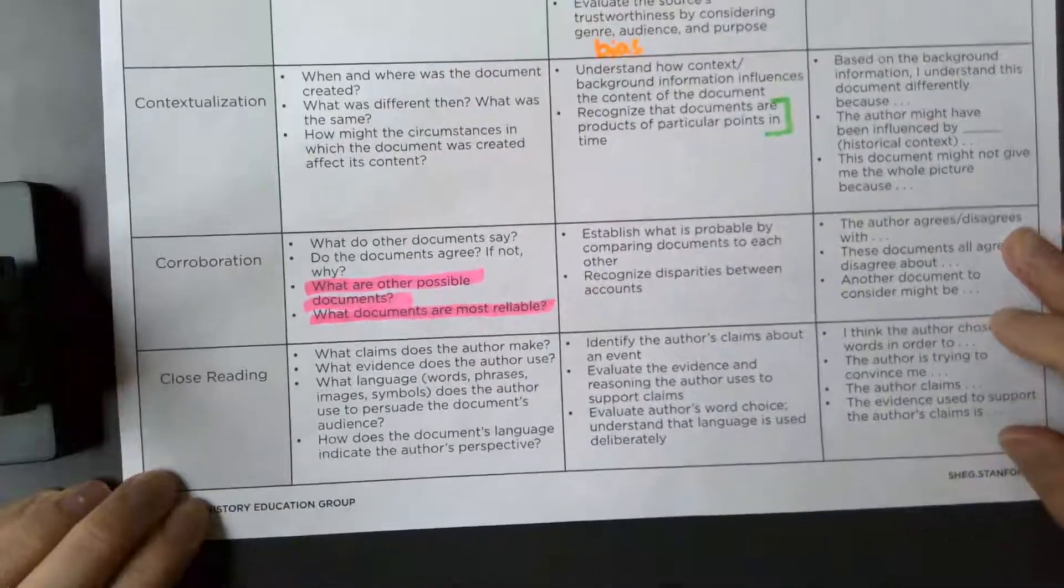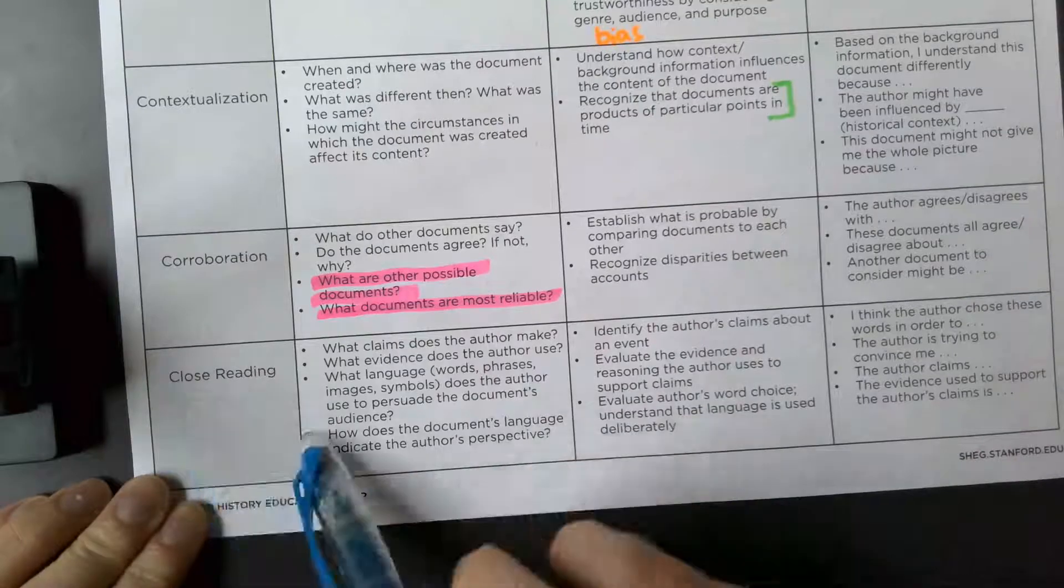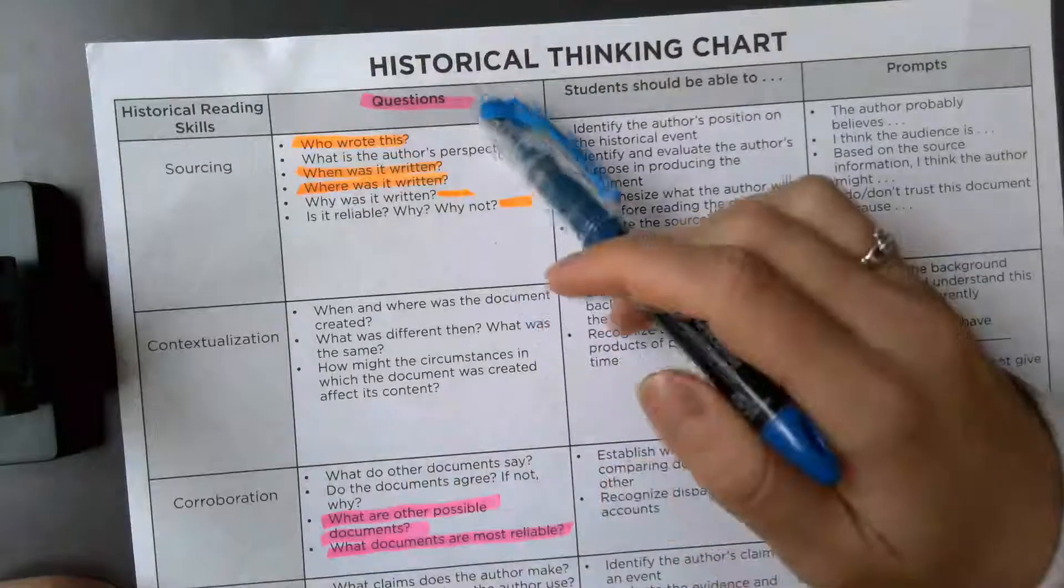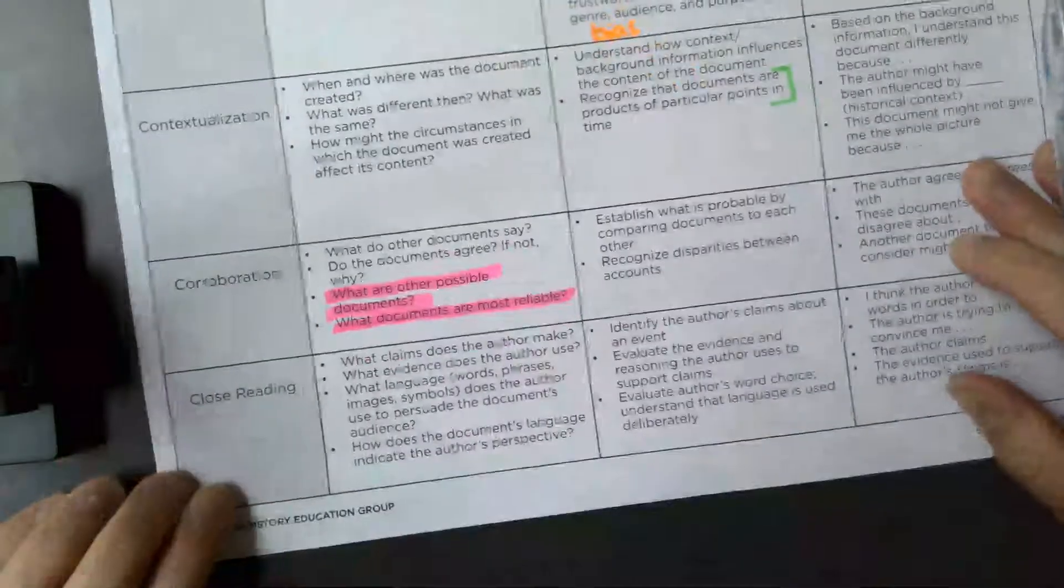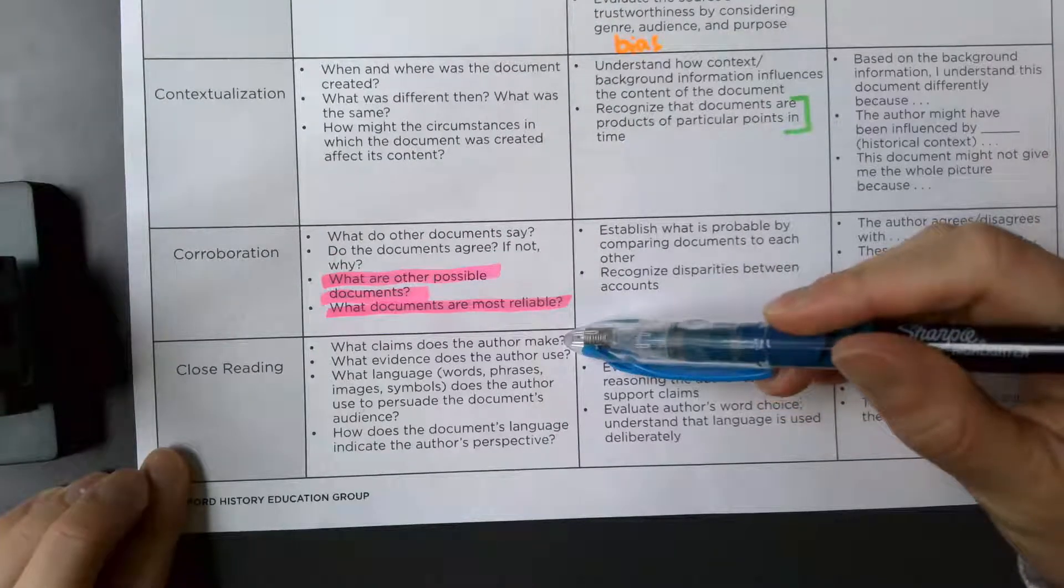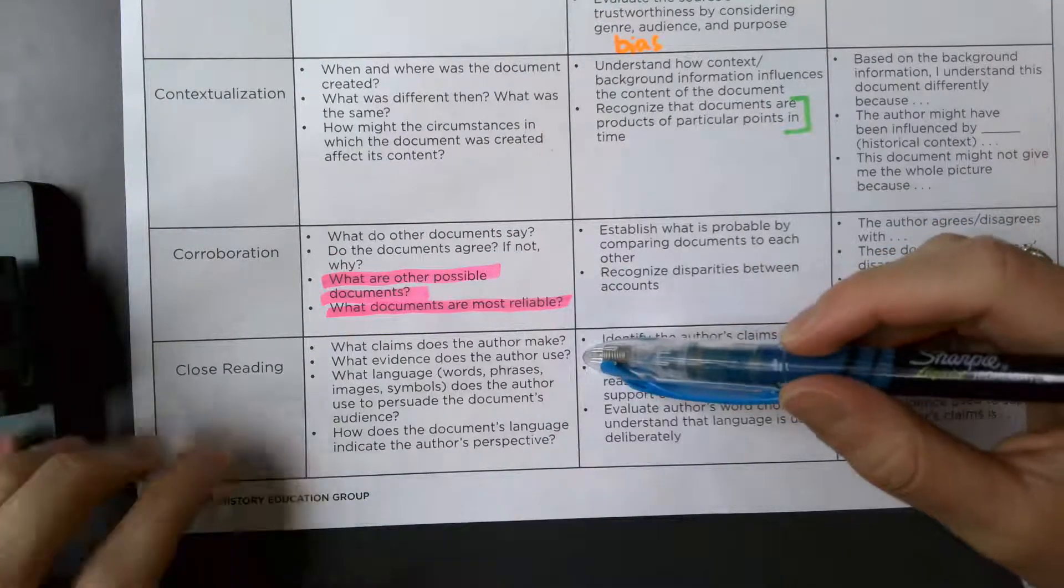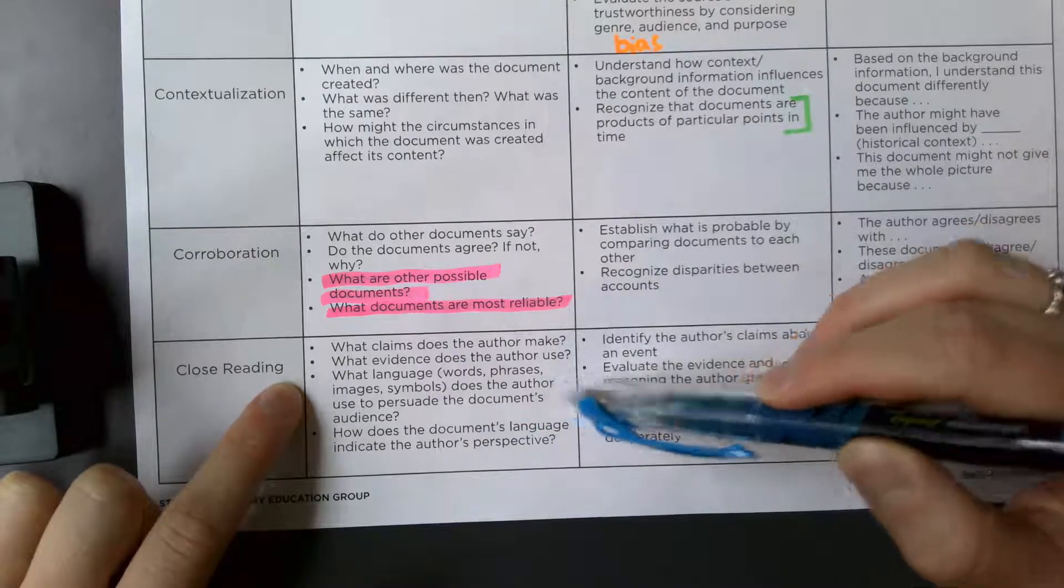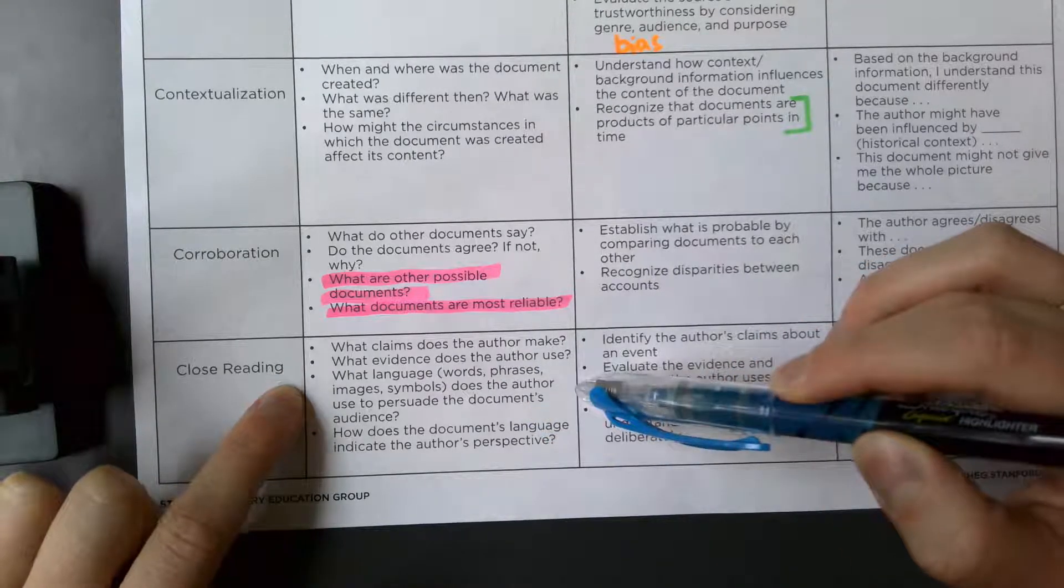All right, so close reading is our last one, and for this one the questions we are asking ourselves are: what claims does the author make? What evidence does the author use? What language, words, phrases, images, or symbols does the author use to persuade the documents audience?